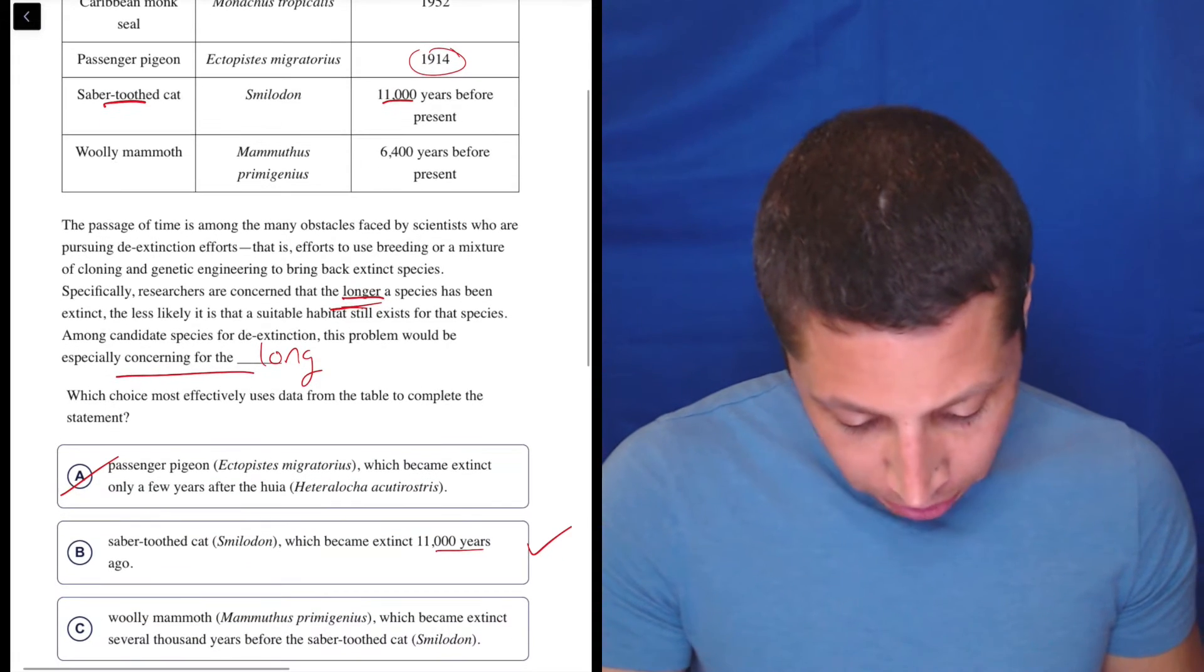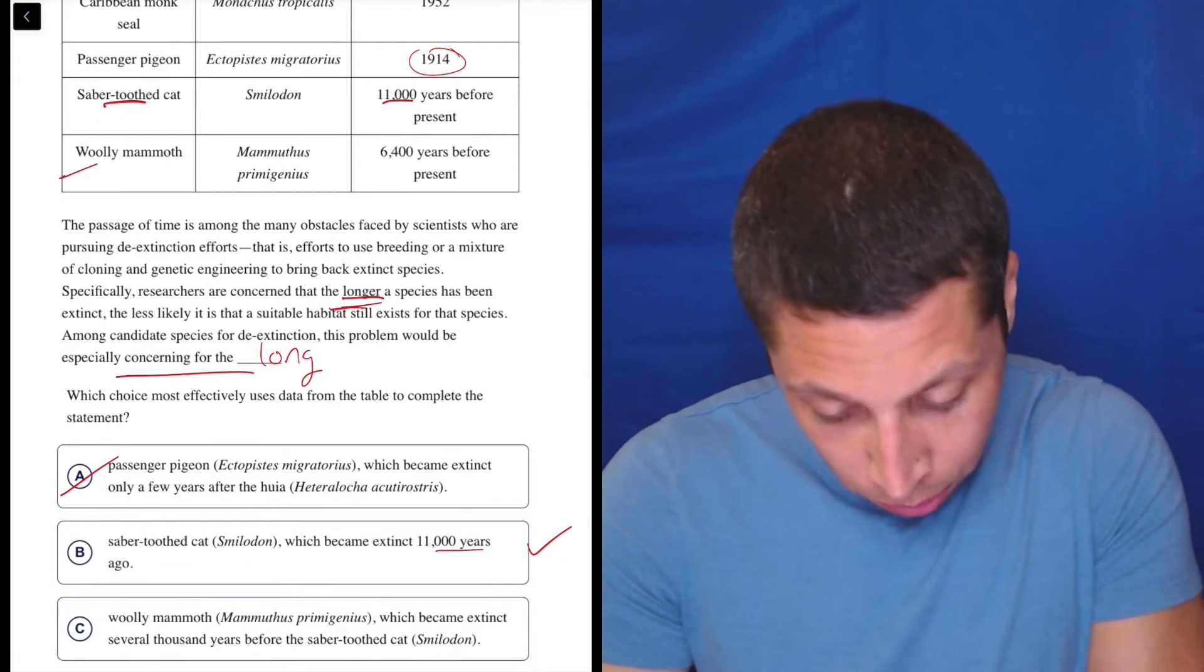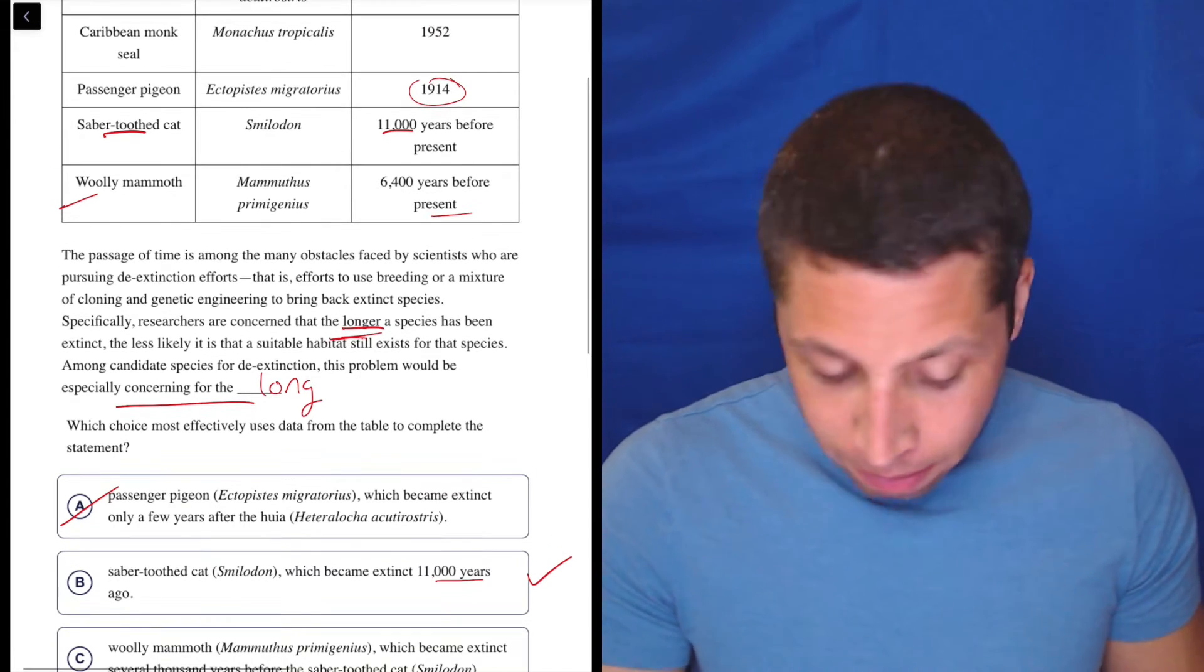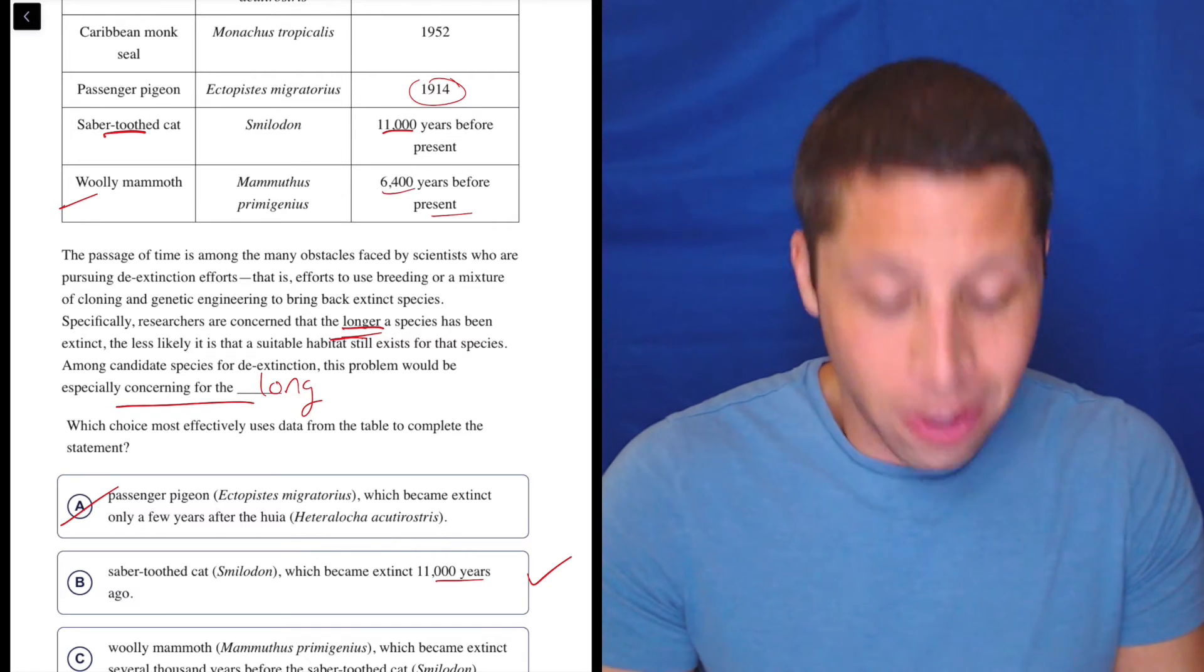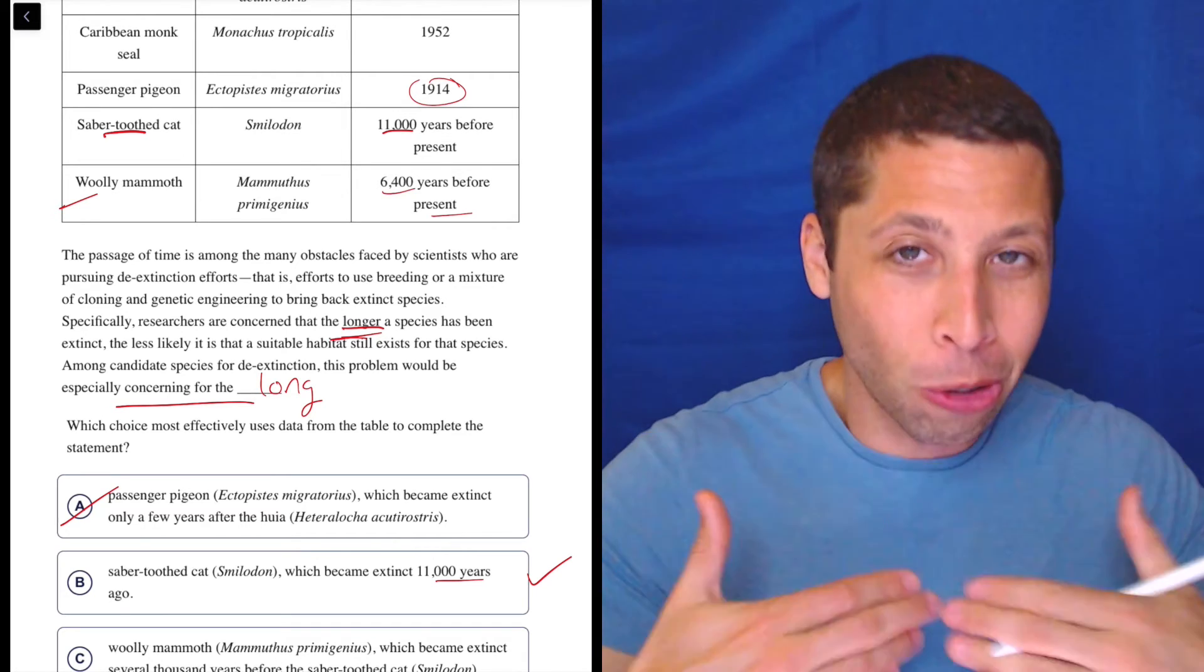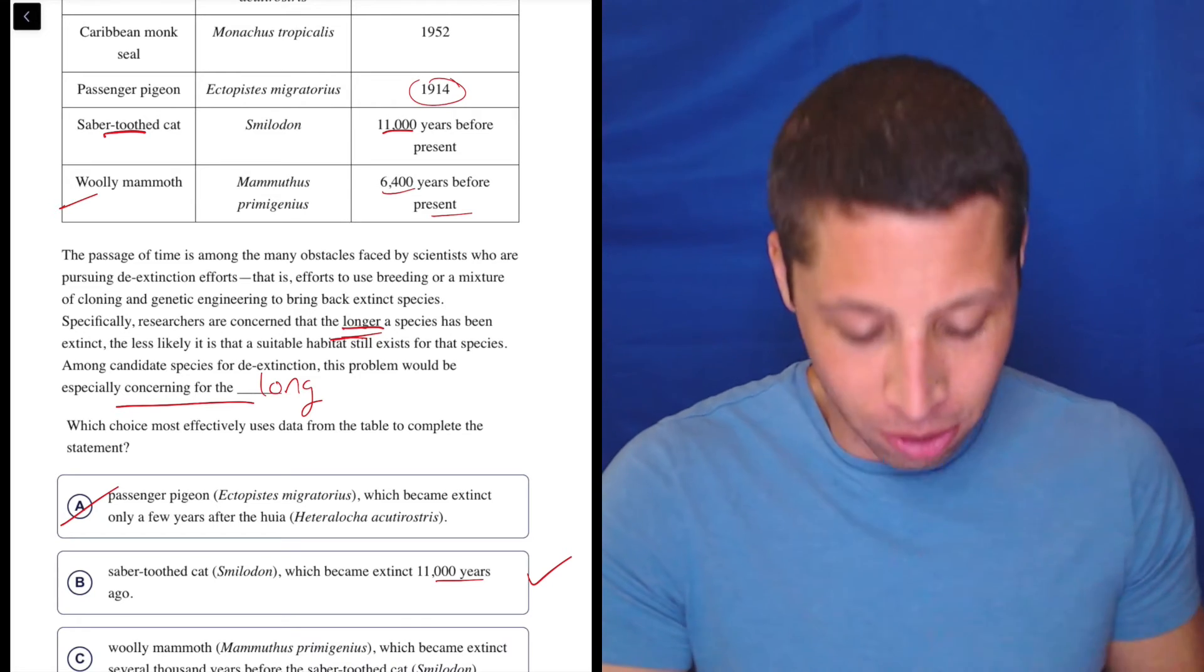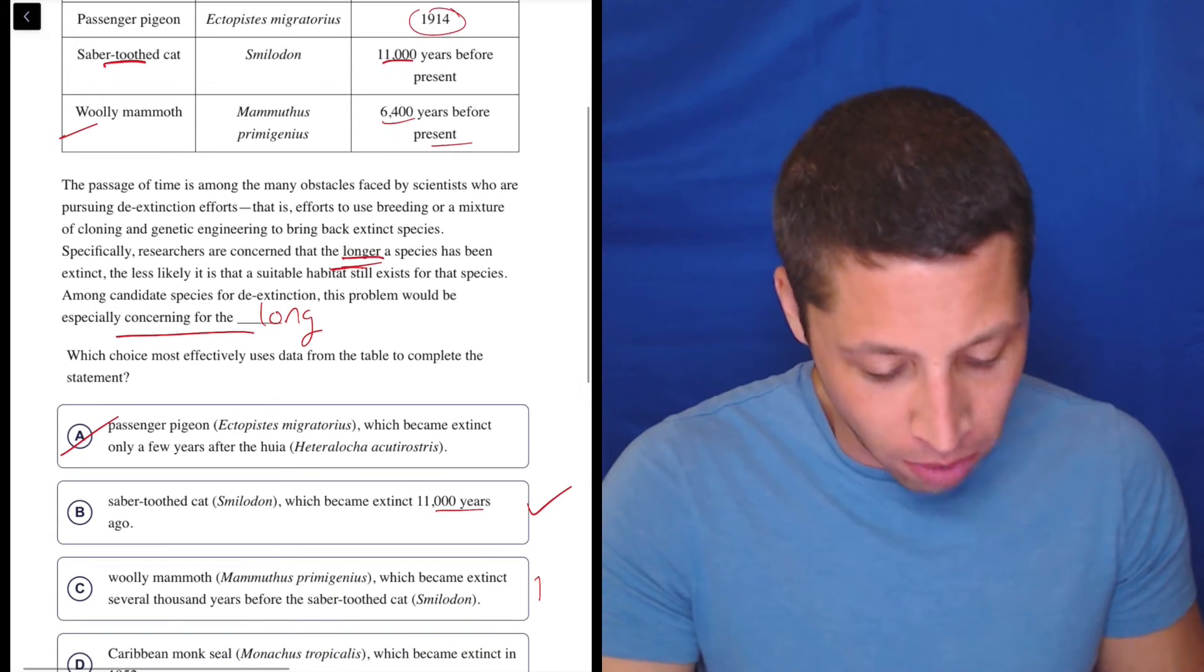See woolly mammoth - okay, well that's also old. Woolly mammoth here, which became extinct several thousand years before the saber-toothed cat. No - 6,400 years ago is closer in time to today than 11,000 years ago. So this is a good example of something that's just false.